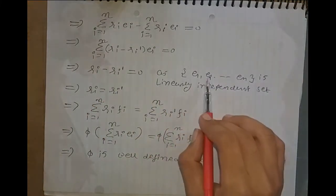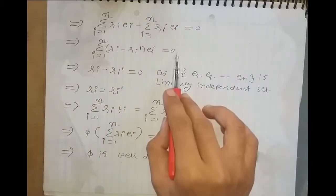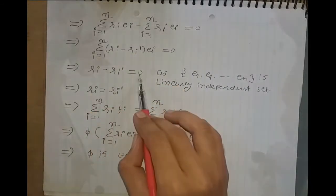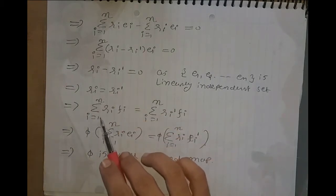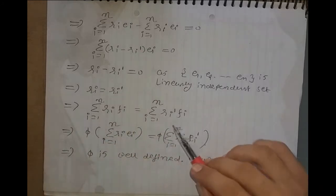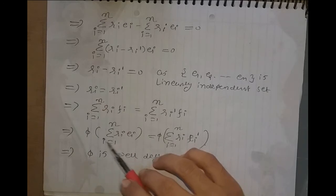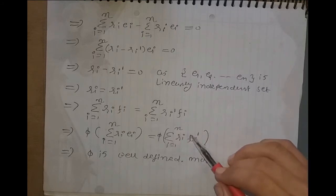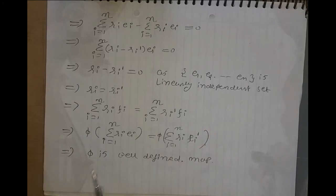The set {E1, E2, …, En} is linearly independent because it is a basis. So from the linear combination being equal to zero, each scalar must be zero, giving Ri − Ri' = 0, hence Ri = Ri' for all i. This implies Σ Ri·Fi = Σ Ri'·Fi, meaning φ(Σ Ri·Ei) = φ(Σ Ri'·Ei). Therefore φ is well-defined.